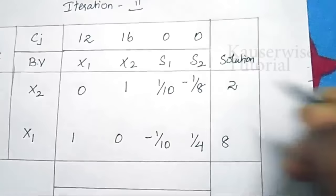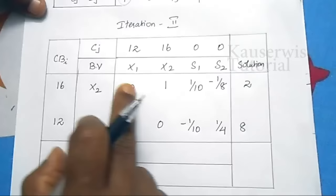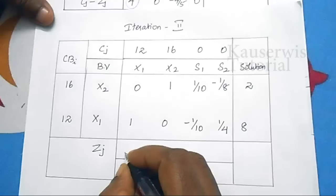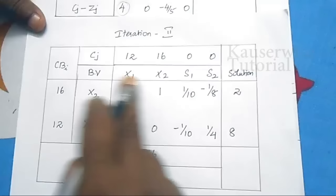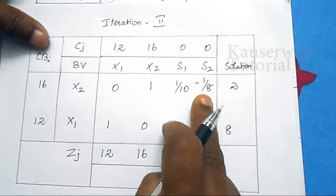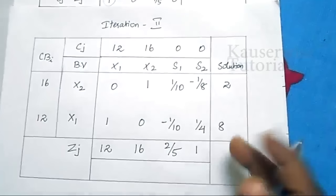Now find zj for the second iteration. For x1: 16×0 + 12×1 = 12. For x2: 16×1 + 12×0 = 16. For s1: 16×(1/10) + 12×(−1/10) = 2/5. For s2: 16×(−1/8) + 12×(1/4) = 1. For solution: 16×2 + 12×8 = 128. Then cj minus zj: 12−12=0, 16−16=0, 0−2/5=−2/5, 0−1=−1.